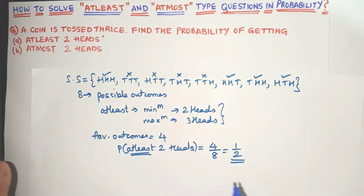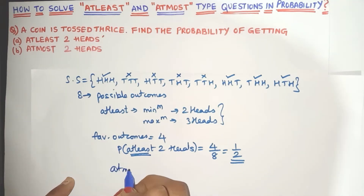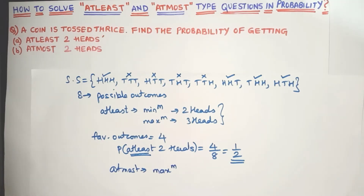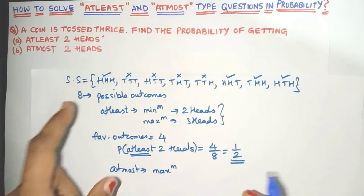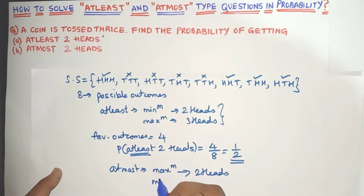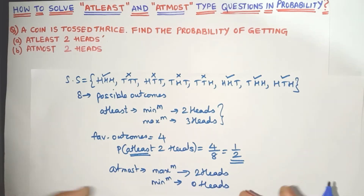Now let's come to 'at most two heads.' The word 'at most' means maximum. For example, 'you can make at most three mistakes' means maximum you can make three mistakes. So 'at most two heads' means maximum we can get two heads. As for the minimum, there is no mention of that — minimum you can get zero heads. So you can get zero heads, one head, or two heads, but not more than two heads.